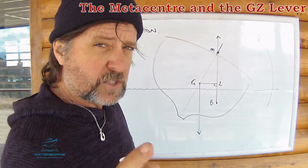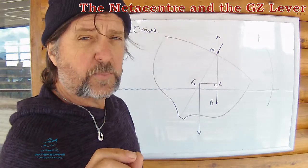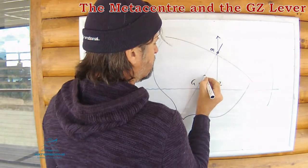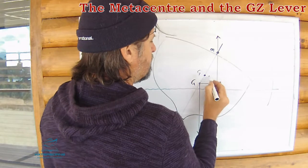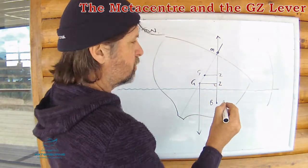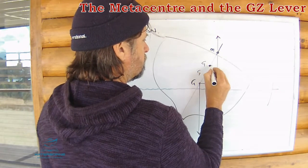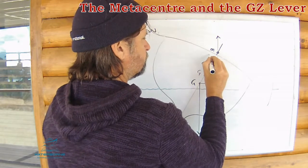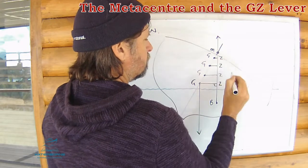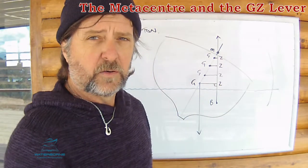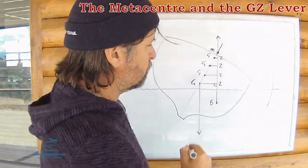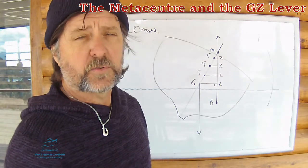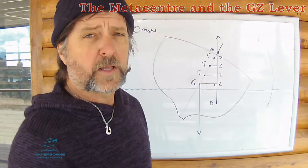Let's raise G for whatever reason — let's imagine we've loaded our ship with more weight above the initial centre of gravity. G will then be higher and you can see what happens to GZ. Loading it more, GZ becomes smaller and smaller. What happens to the force? Nothing — still pushing up with a force of 20 tonnes, but the lever becomes smaller. The moment becomes reduced and the ability for the ship to return upright quickly is also greatly reduced.